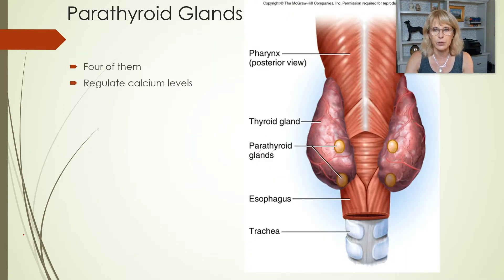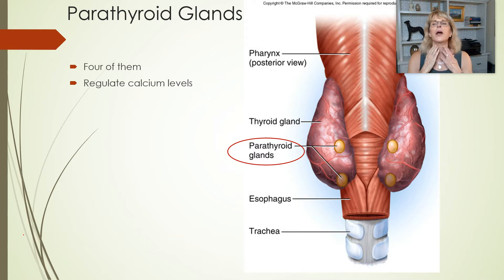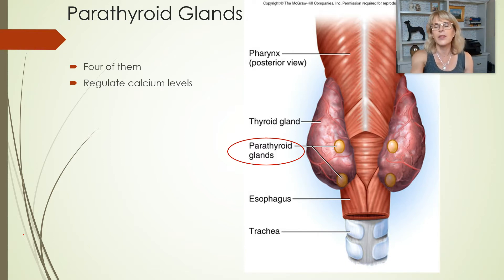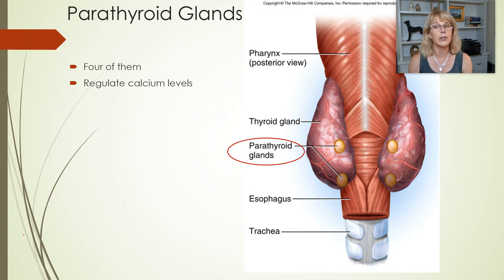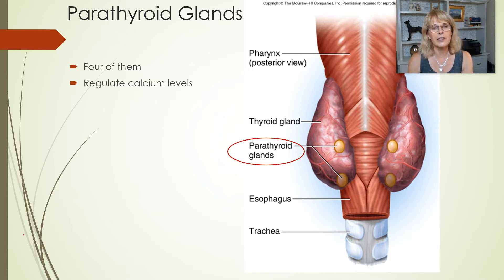Let's talk about the parathyroid gland first. It's located behind the thyroid gland, which is right here in the front. If I wanted to see the parathyroid gland, I'd have to flip the thyroid around, and then it would look something like this image here on the right. You can see the parathyroid glands are very small compared to the thyroid gland. The thyroid gland makes thyroid hormone; the parathyroid gland makes parathyroid hormone. It regulates calcium levels.